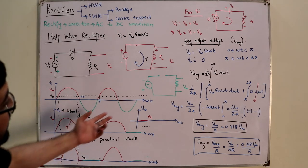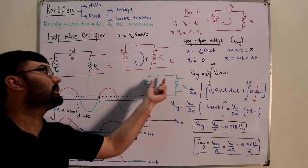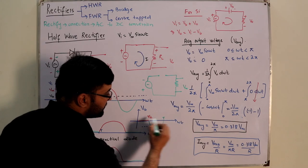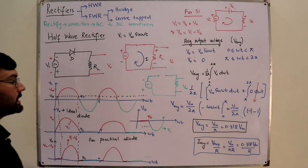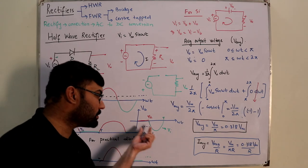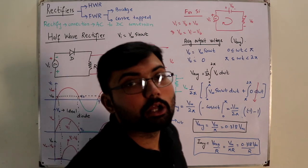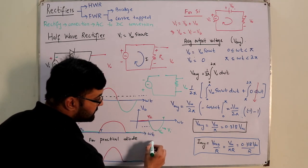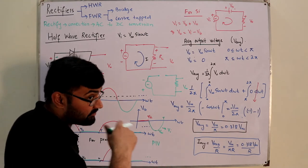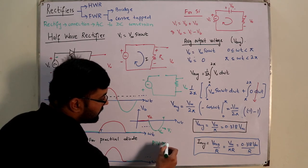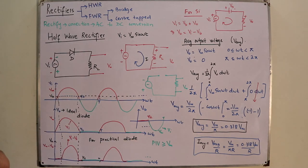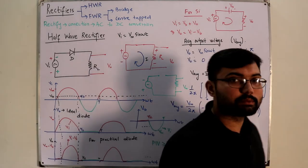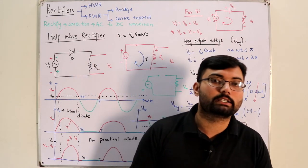In the negative cycle, the entire input voltage appears across the diode, equaling V_input from t/2 to t. The peak inverse rating is the maximum reverse bias potential that can be applied across the diode before it enters the breakdown region. The necessary condition is that the peak inverse rating of the diode must be greater than or equal to V_m. That concludes this video on the half wave rectifier; see you in the next video.